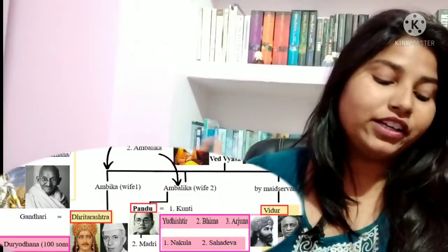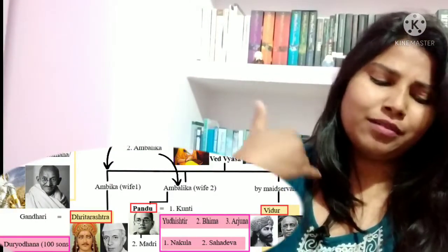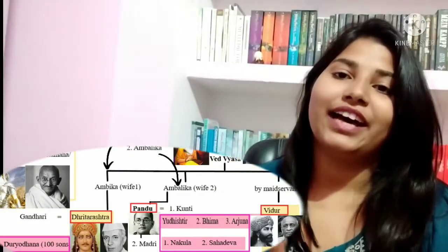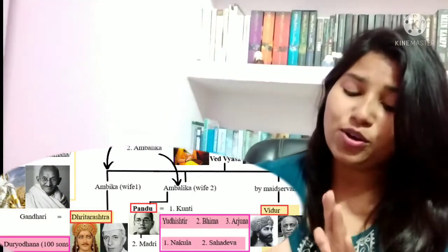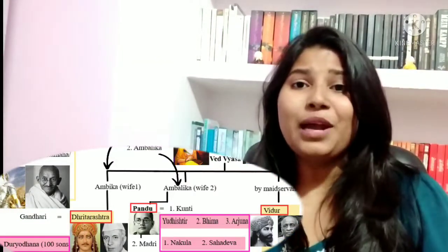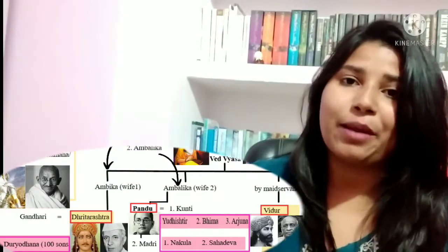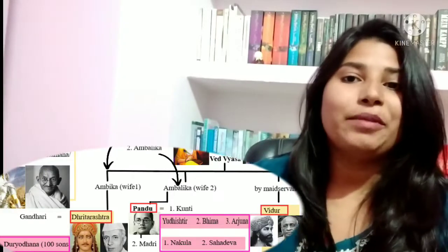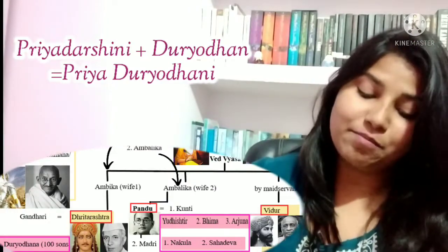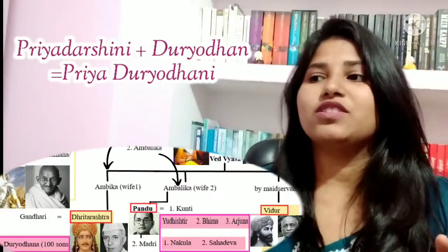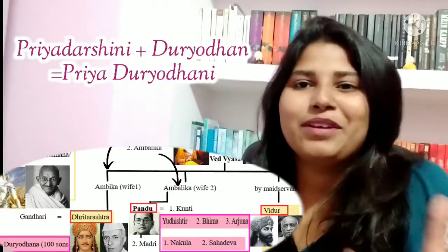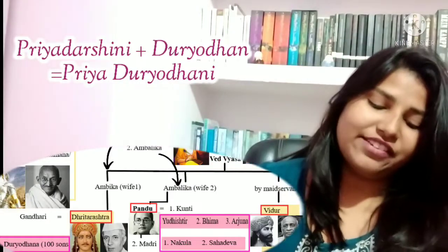Gandhari and Dhritarashtra have a daughter named Priya Dhritarashtra. The combination of 'Priya Dhritarashtra' and 'Duryodhani' gives us 'Priya Duryodhani' — the fictional name given to Indira Gandhi, India's first woman Prime Minister. Writing Indira Gandhi's name directly would have been controversial, which is why these fictional names were created.